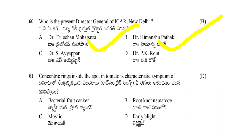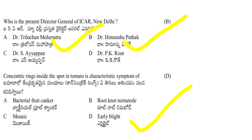Concentrated rings inside the spot on tomato is a characteristic symptom of: bacterial fruit canker, root knot nematode, mosaic, or early blight. The answer is D — early blight. Concentrated rings are characteristically associated with early blight, not anthracnose.